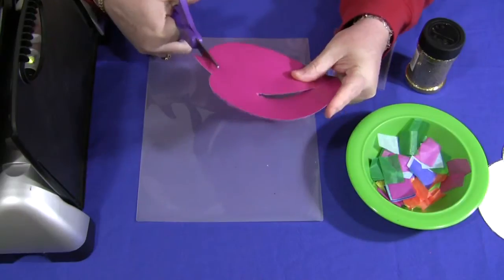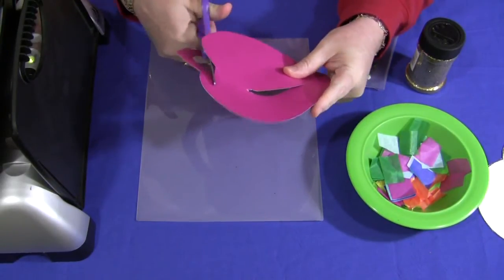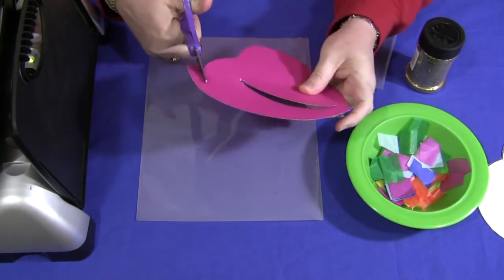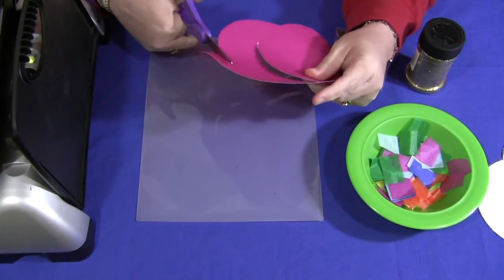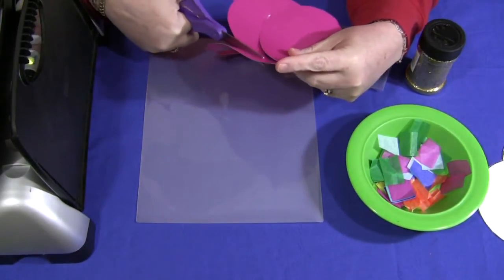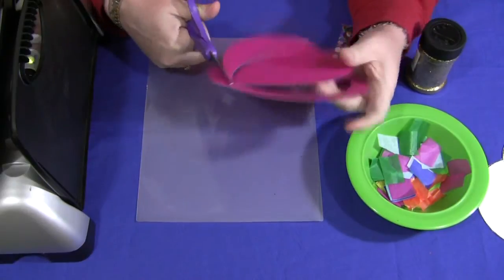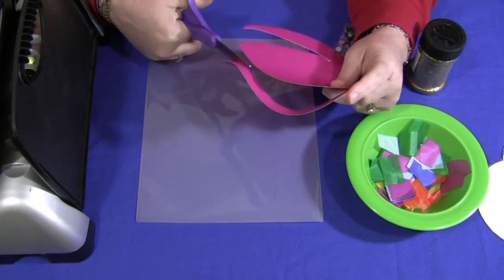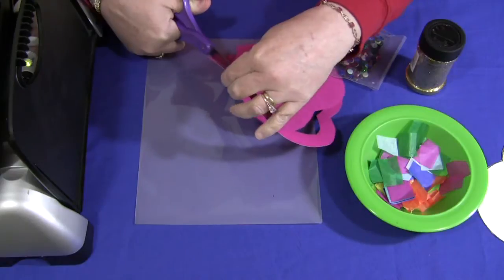And again, this can be more than just hearts. It can be for any type of sun catcher that you want to use. So you would cut the center out of each sun catcher pattern like I've done here.